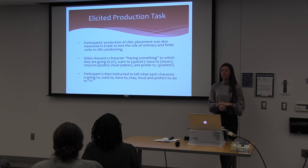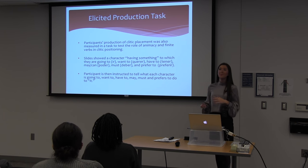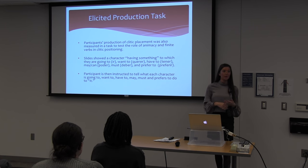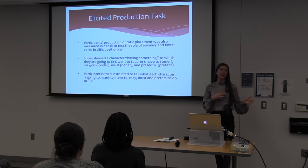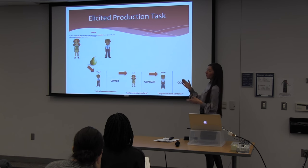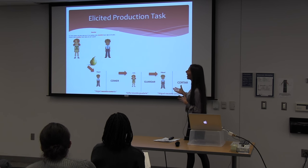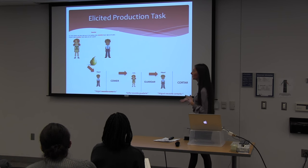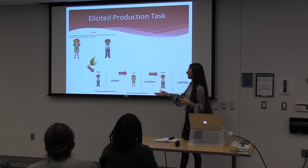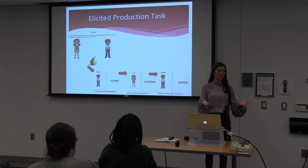Our second task was an elicited production task. We wanted to measure the role of animacy and finite verbs in clitic positioning in a more naturalistic setting — they weren't being tested on memory or hearing a recording. They were free to click through slides and just produce what came naturally. There were two characters, a little preamble with each character, and a referent. For example, Eli, Nico, and Sofia had a pear and we needed to know what they need to do with it. As they flipped through the slides with a finite verb and character, we might hear: 'Miguel, necesito comerla' or 'Sofia, necesito guardarla.'